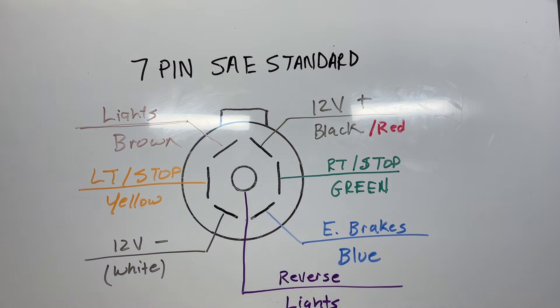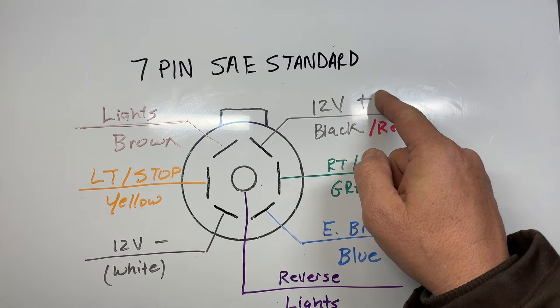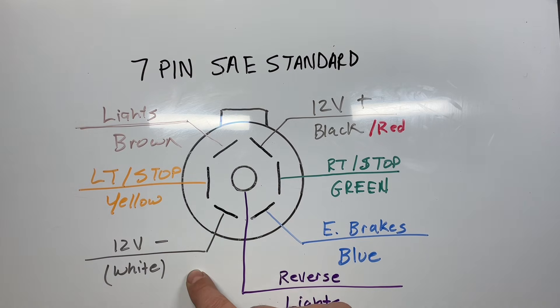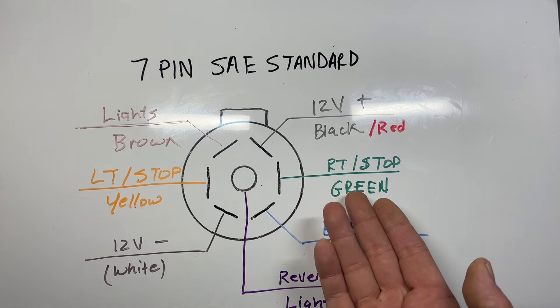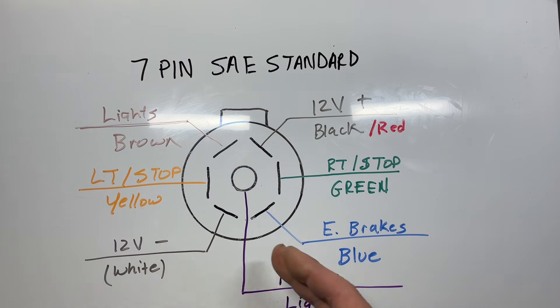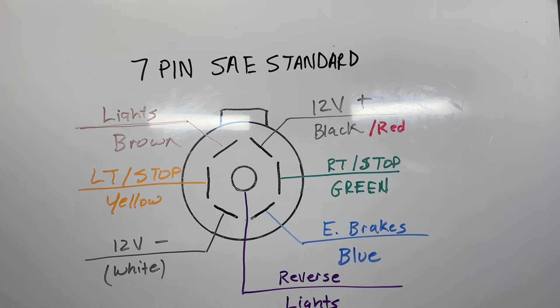So the way it goes around, if you're looking at the clock, the first position in the clock is 12-volt positive. Directly opposite of that is 12-volt negative, black and white, or red and white. Right turn will be on the right-hand side in green, left on the left side in yellow. Electric brakes at the third position in blue, running lights in brown at the sixth position, and reverse lights the center pin, generally in violet or purple.